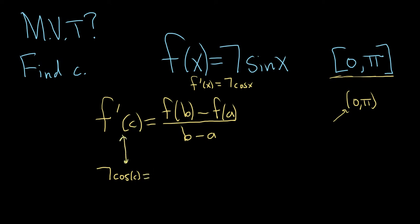That's equal to, so your a here is going to be 0, and your b is going to be π. So it'll be f of π, because b is π, minus f of 0, over, and then b minus a, so π minus 0.